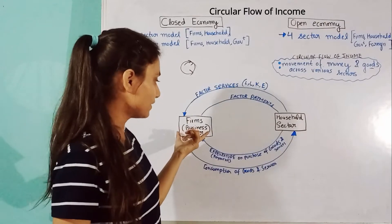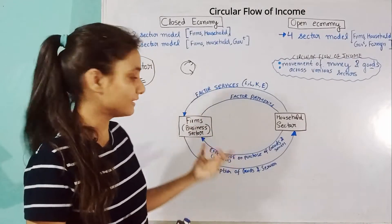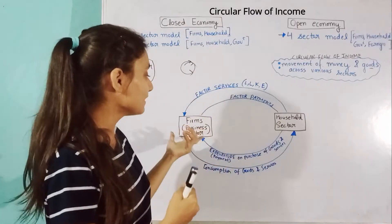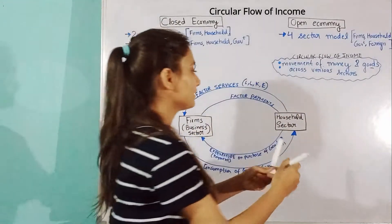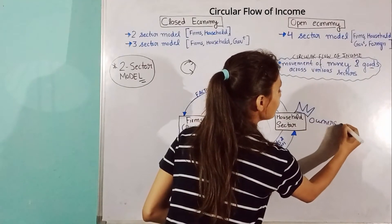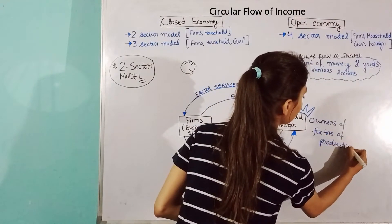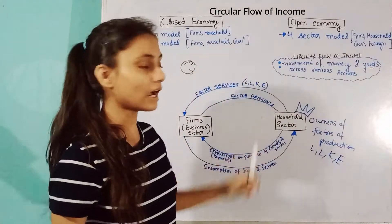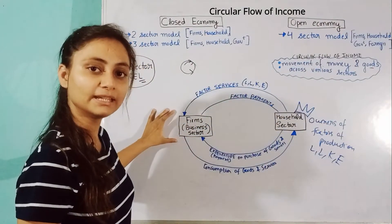Producers need to produce goods and services. To do that, they need factors of production: land, labor, capital, and entrepreneurship. Where do they get these from? They get them from the household sector, because households are the owners of factors of production. So households supply their factor services — land, labor, capital, and entrepreneurship — to the business sector to carry out production.